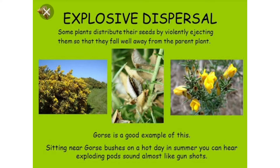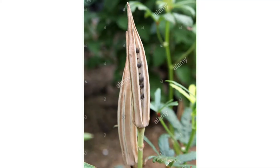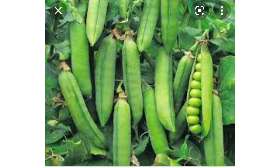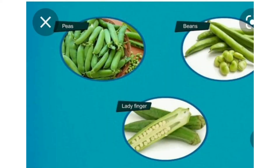Seeds need to get from where they are formed to the ground to grow into a new plant. The dried fruit explodes, spreading the seeds away from the mother plant. For example, ladyfinger and peas. In this type, seeds are violently ejected from the plants so that they fall away from the parent plant. This is dispersal by explosion.